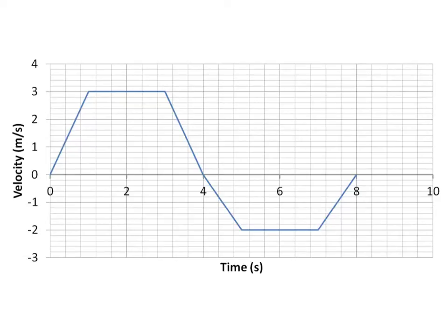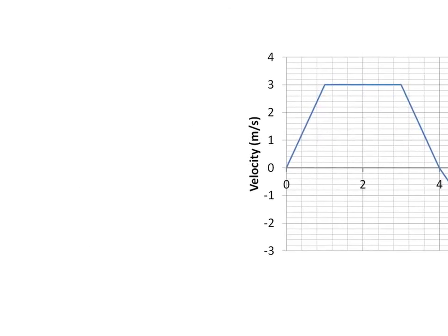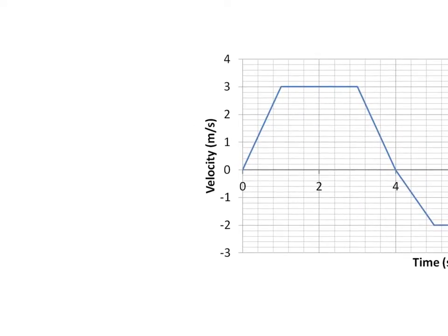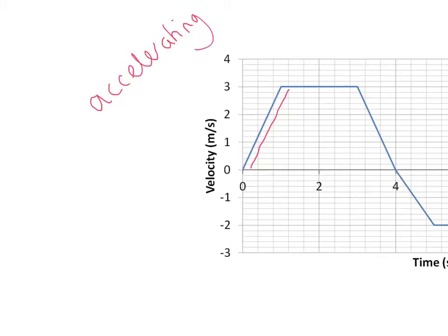So let's break this down into sections. The first part we're going to look at is this section here. The first thing to notice is that in that section, the graph is moving away from the x-axis, which means it is accelerating — the magnitude of the velocity is getting greater. And the key thing to notice is that it's a straight line with a constant gradient, which means it's a constant acceleration.